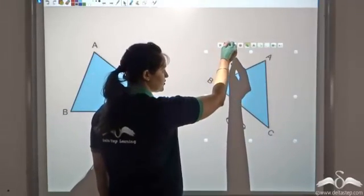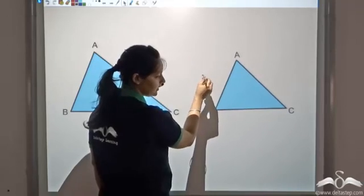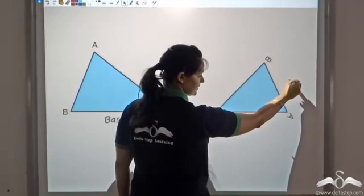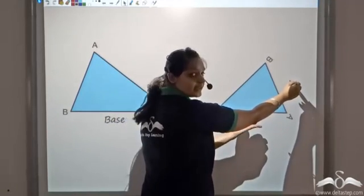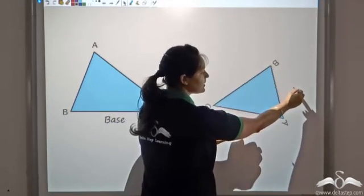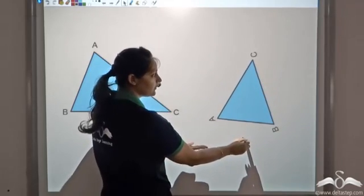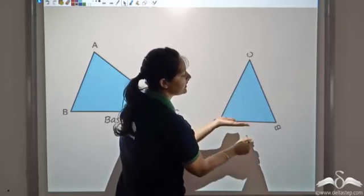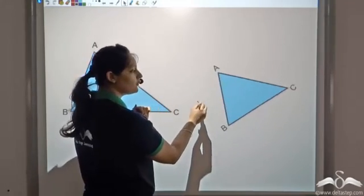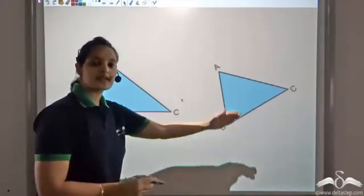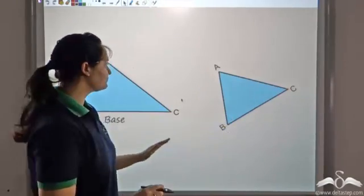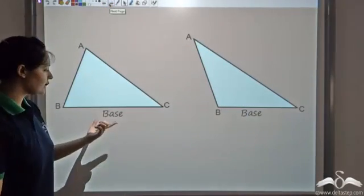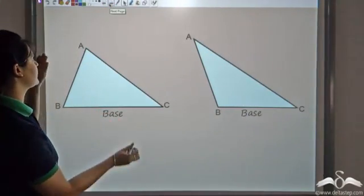For a tilted triangle where no side is clearly at the bottom, we can rotate it to see that BC, CA, or AB can each serve as the base. So for a triangle, any of the three sides can be the base, and the height is defined as the distance from the base to the opposite vertex.